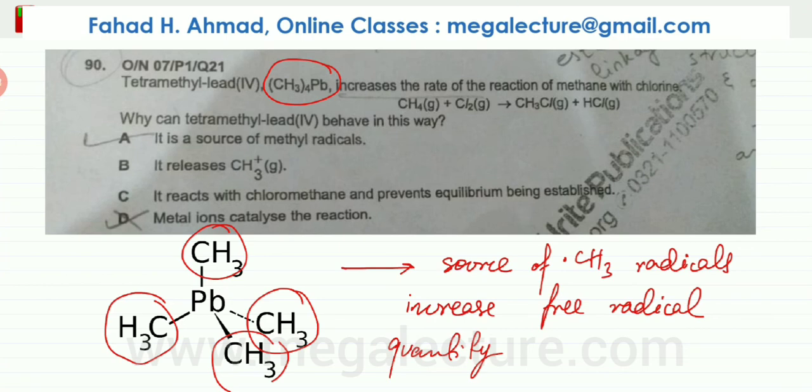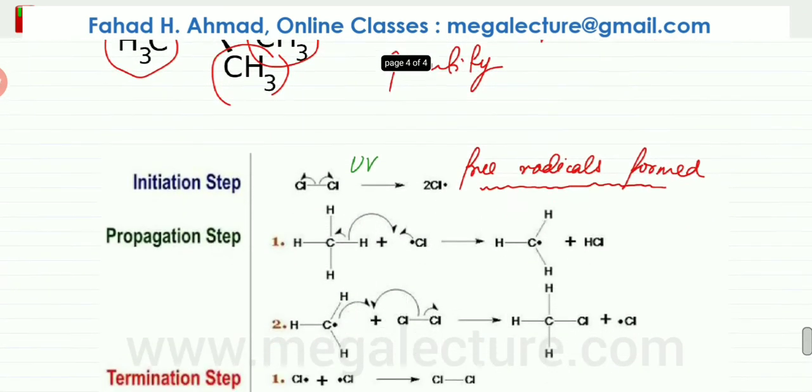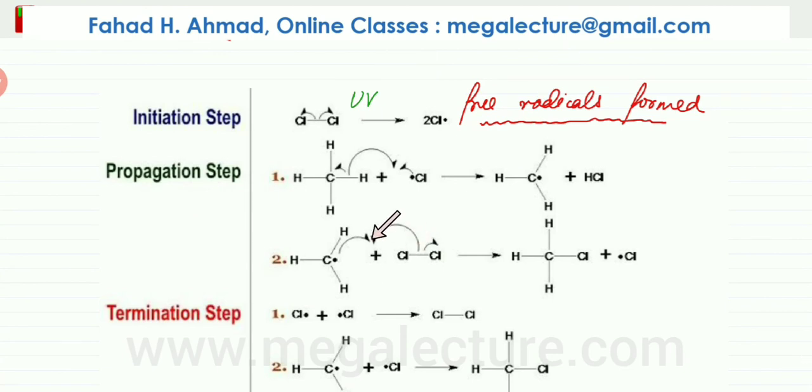And obviously, if there are more free radicals, the whole reaction depended on free radicals. The free radicals were the ones that were attacking all the other molecules. This methyl radical was attacking the chlorine molecule.